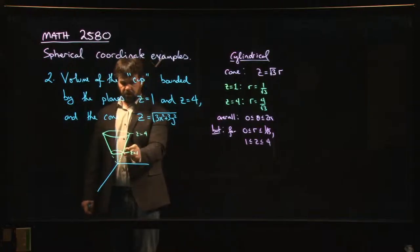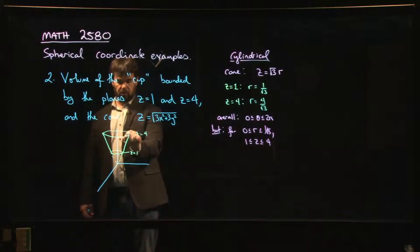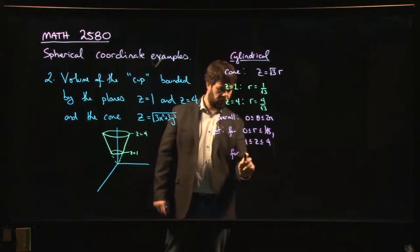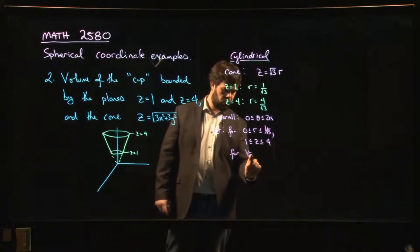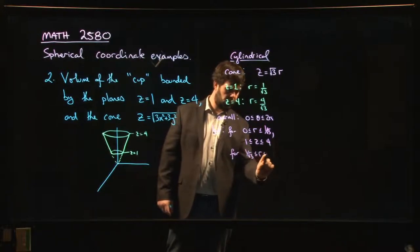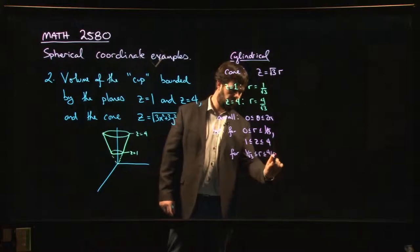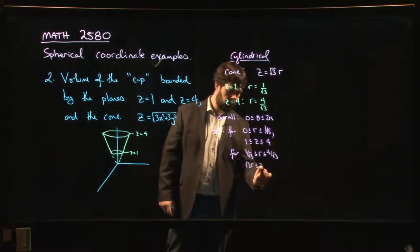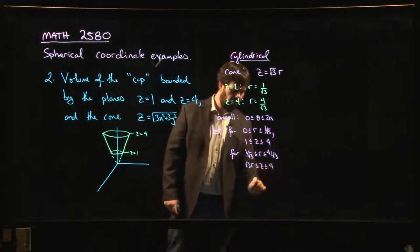But once we get outside that circle, the lower bound for z changes. It changes from the circle to the cone. And so for r from one over root three to four over root three, we can see that z is going to be root three times r. So z will go from root three r to four.